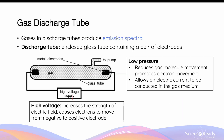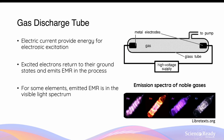Gases in discharge tubes produce emission spectra. A discharge tube is an enclosed glass tube containing gases and a pair of electrodes connected to a high voltage supply. The high voltage supply creates a strong electric field which causes electrons to travel through the gas medium from one electrode to another — the high voltage makes it possible for current to be conducted through a gaseous medium. A discharge tube also operates at a low pressure setting, which further promotes electron movement through the gas medium by reducing gas molecule movement. The electric current enabled by the high voltage and low pressure conditions provides energy for electronic excitation — that is, the current passing through the gas medium provides energy to be absorbed by the electrons in the gases so they can move up to higher energy levels.